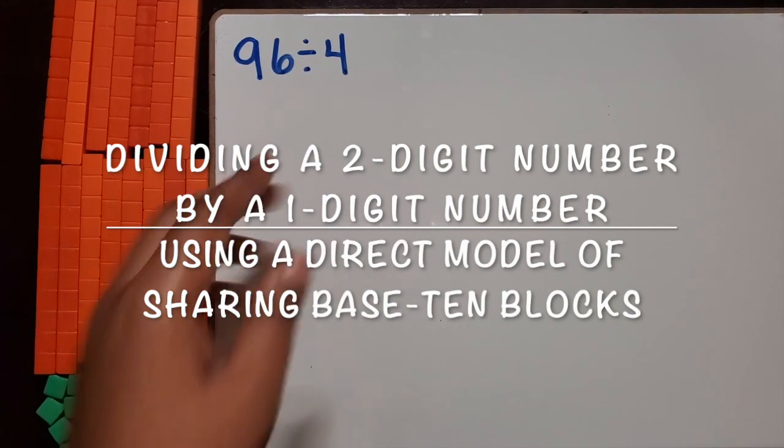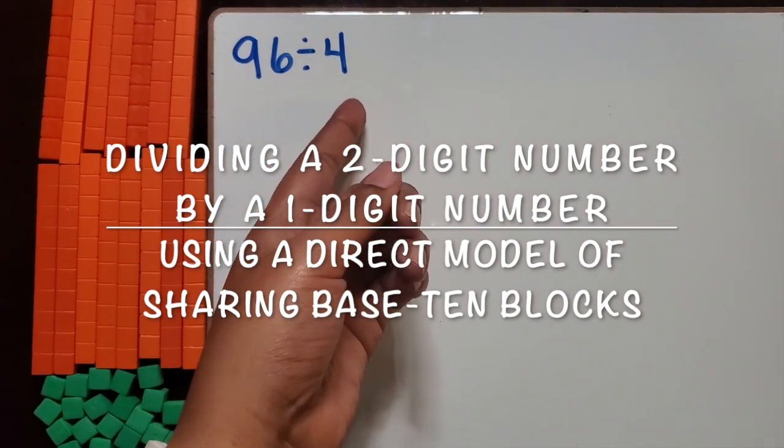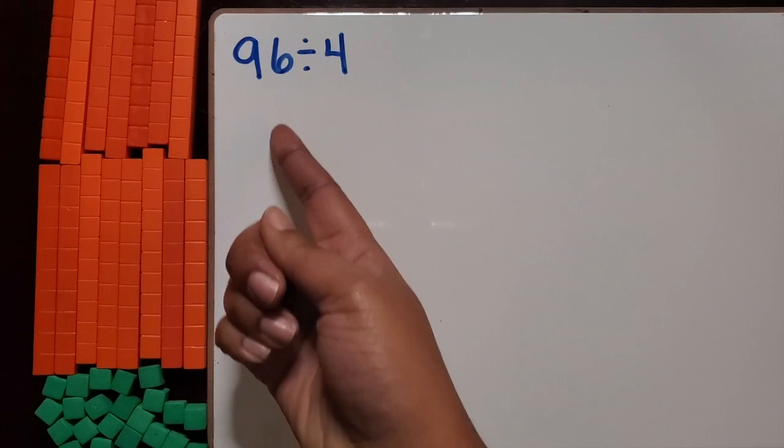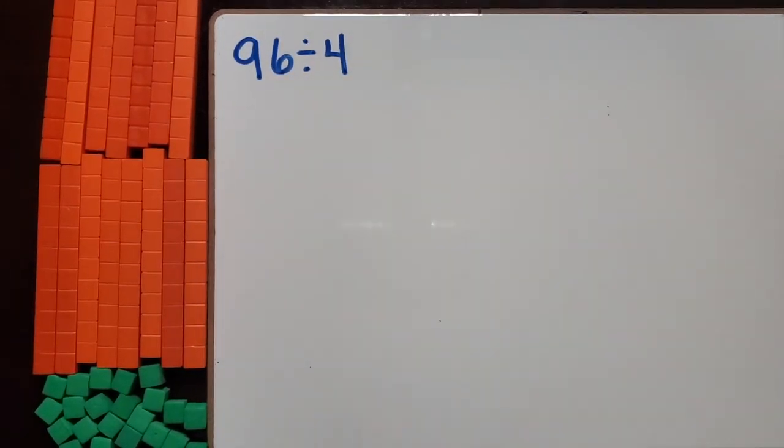We're going to divide a two-digit number by a one-digit number using a direct model of sharing base 10 blocks. So we have our expression here, 96 divided by 4.